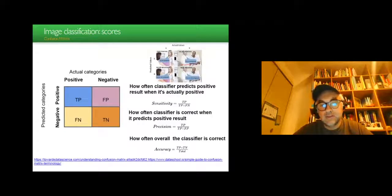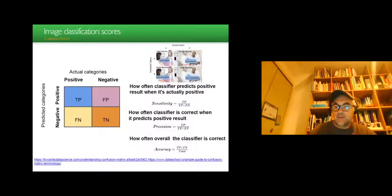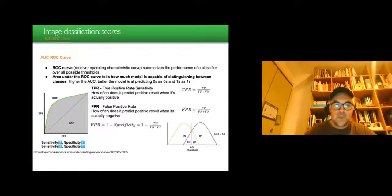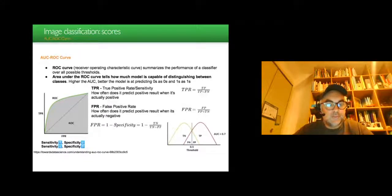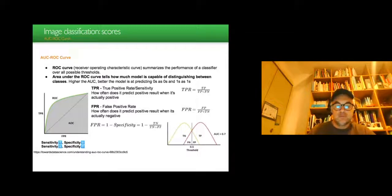Then you can combine in a single scalar the parameters of this matrix to build, for instance, sensitivity: how often the classifier predicts positive results when it's actually positive. To produce precision: how often the classifier is correct when it predicts positive results. And how often overall the classifier is correct, which is called the accuracy. Another way of characterizing the classifier is to use the receiving operator curve that I already described to you, and again, it combines the parameters of the confusion matrix.